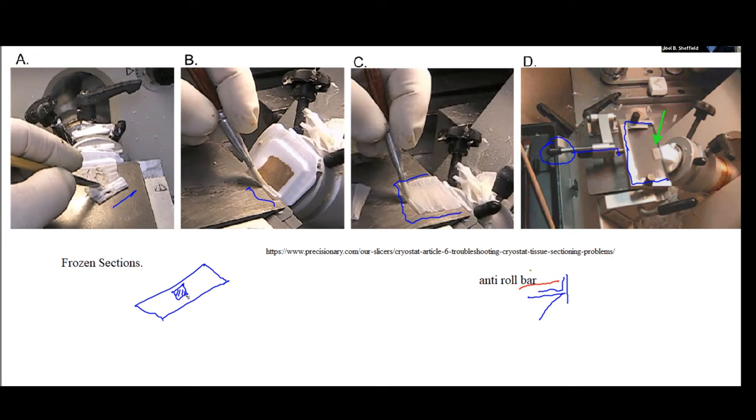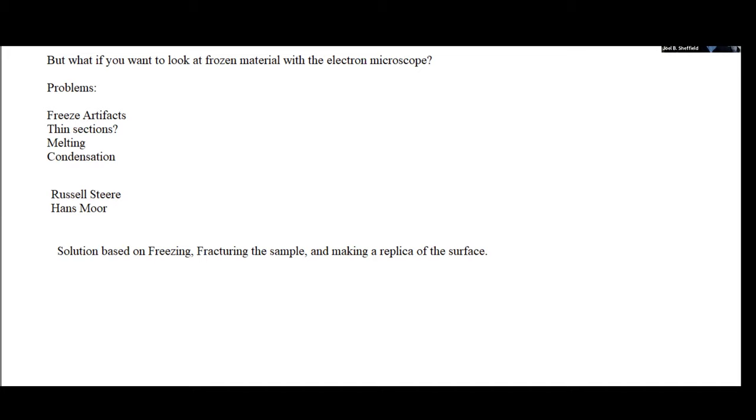Initially, in fact, people like Keith Porter and George Pilati tried to do this to look at frozen sections of material, but it was pretty hard. Part of the problem was that the frozen sections themselves would melt in the electron beam and your tissue would just fall apart. You really couldn't see much in the way of detail. You couldn't get sections really that were very thin with the techniques they had available then. At the same time, when you start working with frozen material, then you have to worry about condensation from the atmosphere.